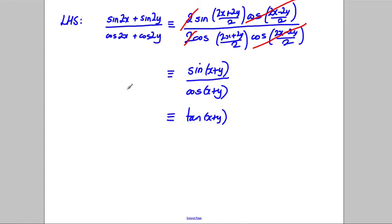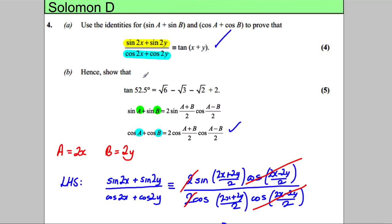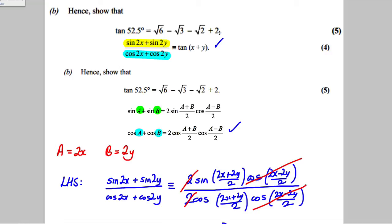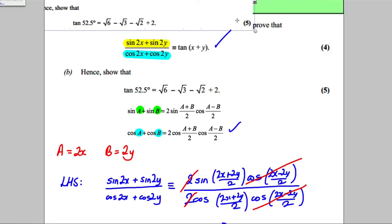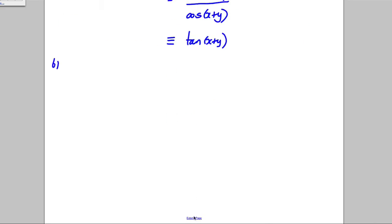Right, part B. It says hence show that tan of 52.5 is equal to this. So I'm just going to take a copy of that just so I've got it close at hand. And we're asked to hence show that the following is true.